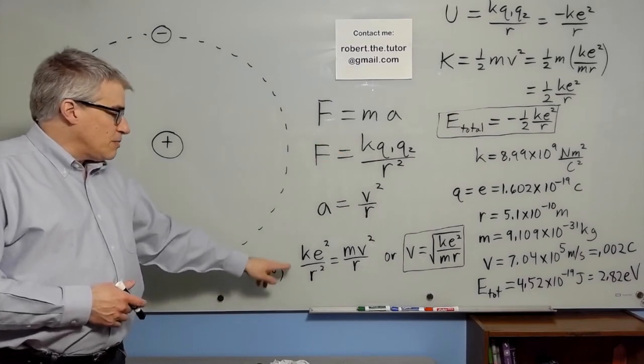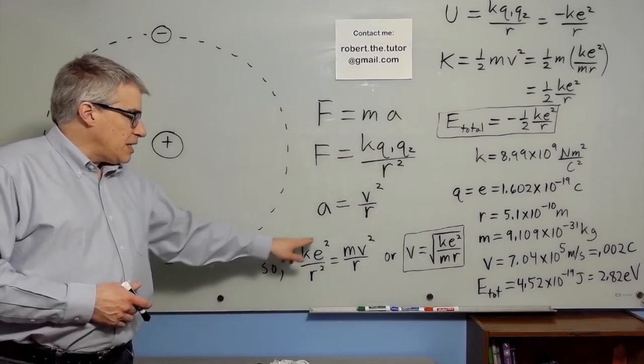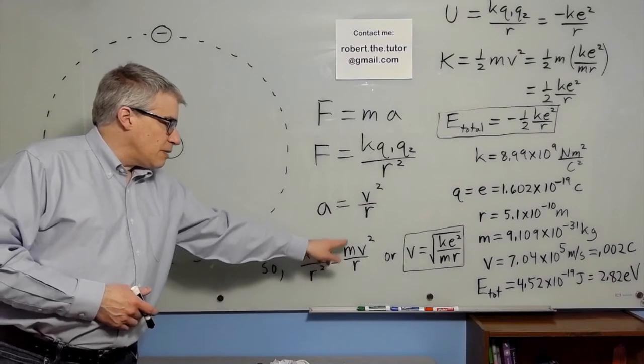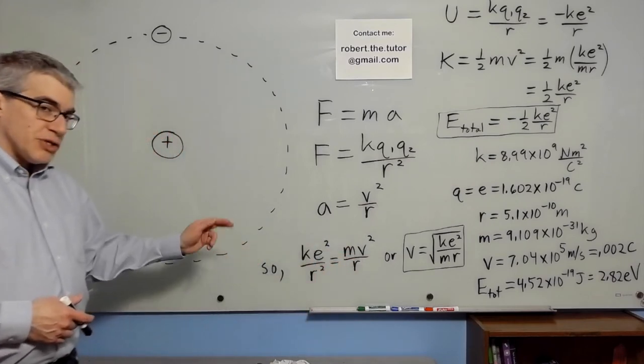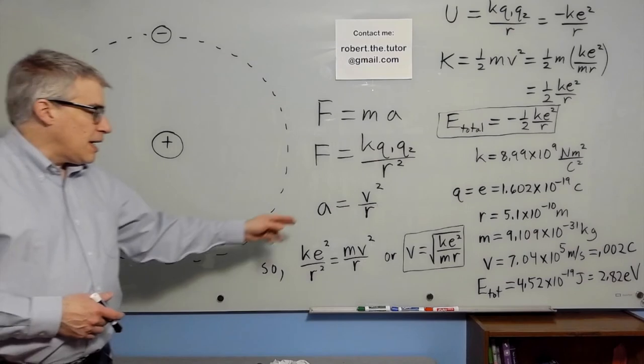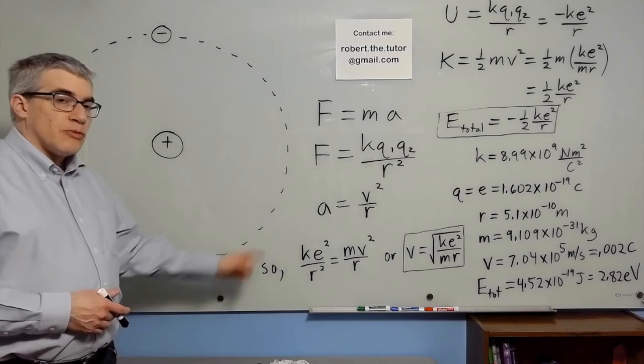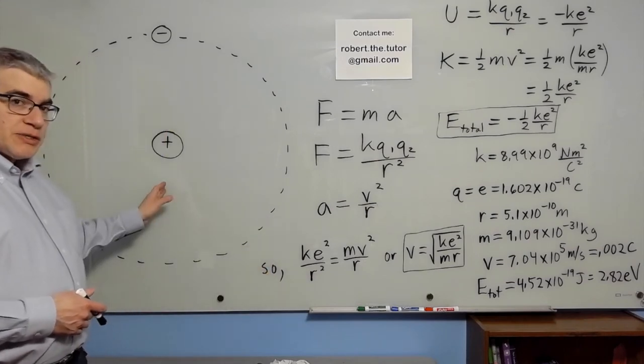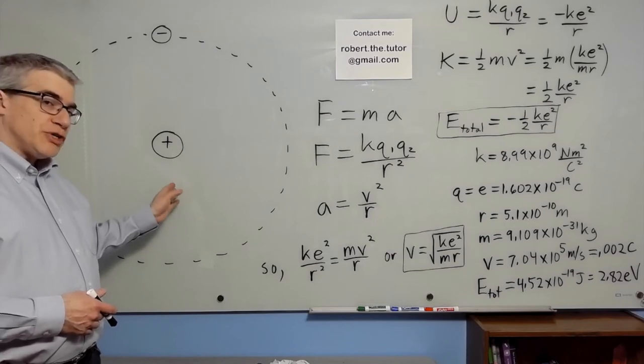If we put them together, we get KE squared over R squared equals MV squared over R, where E is the charge on either one, and M is the mass of the electron. The radius is what we call the Bohr radius, the size essentially of a hydrogen atom.